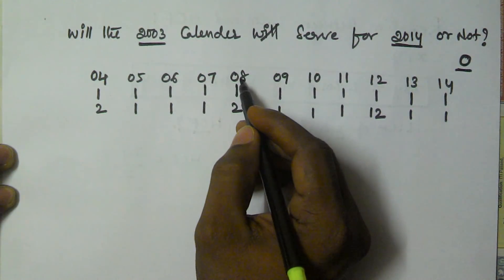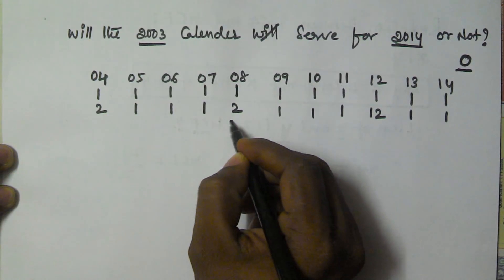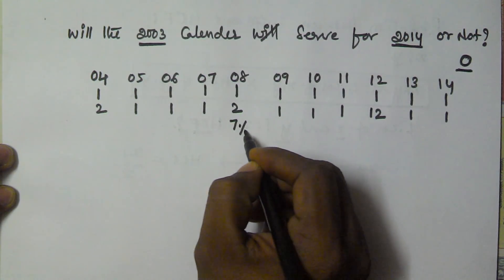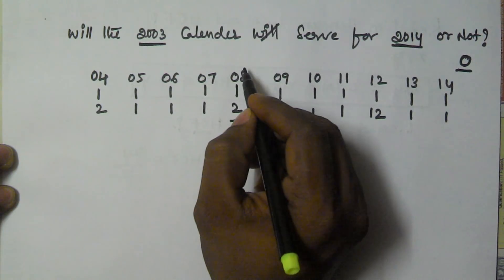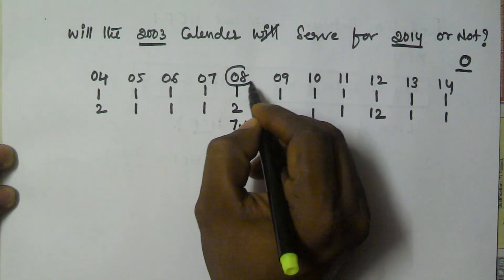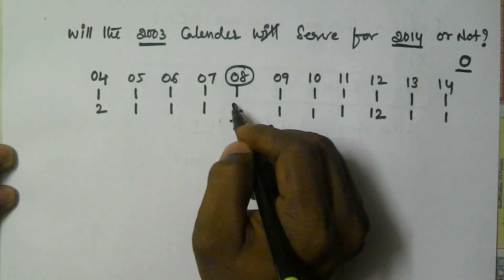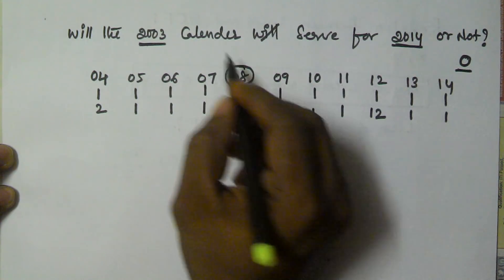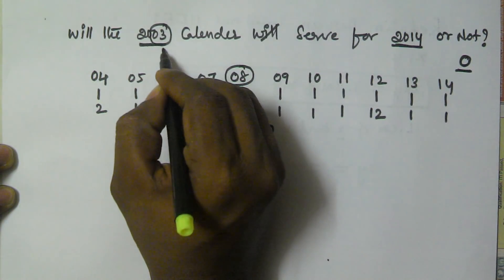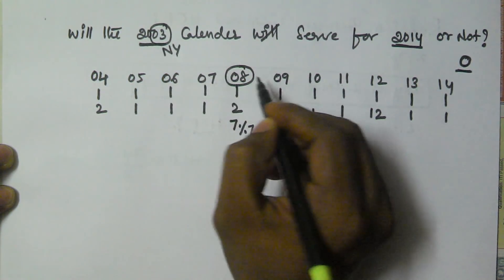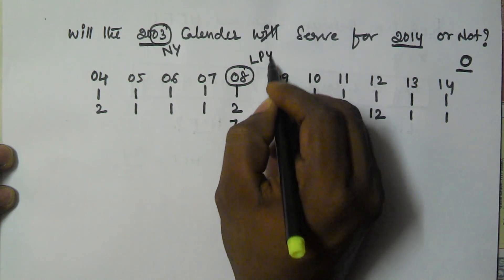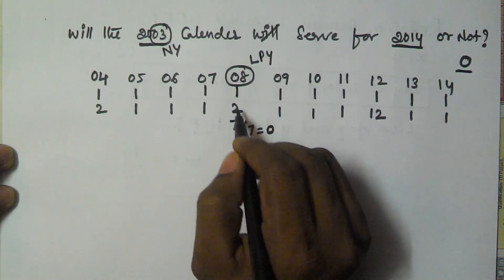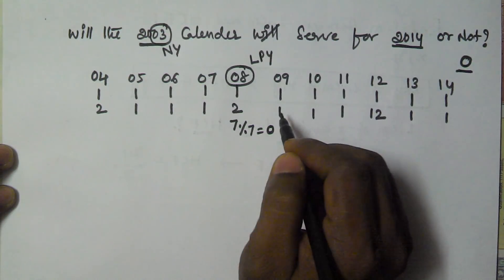We have to take the remainder. But actually, the problem here is 2003 is a normal year and 2008 is a leap year. So we have to continue our process again.